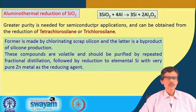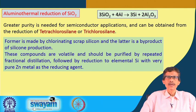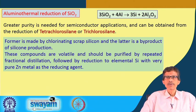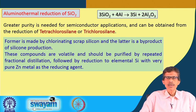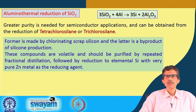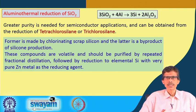These two compounds — tetrachlorosilane and trichlorosilane — are volatile and should be purified by repeated fractional distillation. Volatility is sometimes not ideal for handling a material because of loss through evaporation, but it is also useful if we can go for the corresponding distillation process, which improves the purity of the material through fractional distillation.